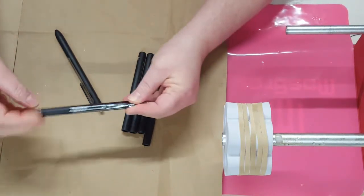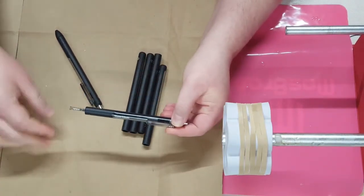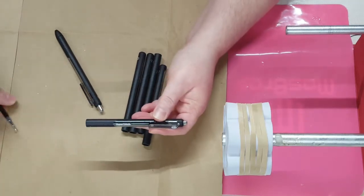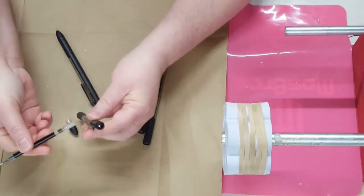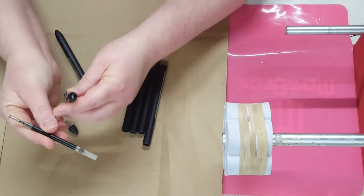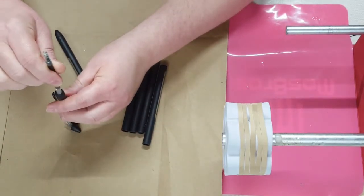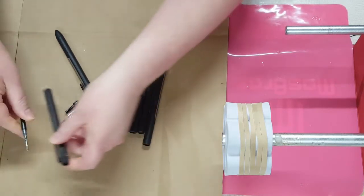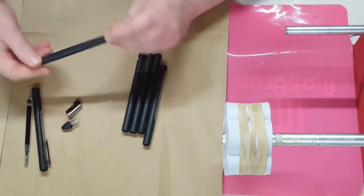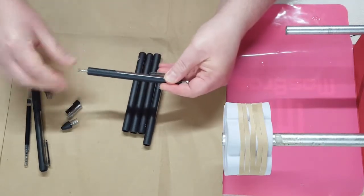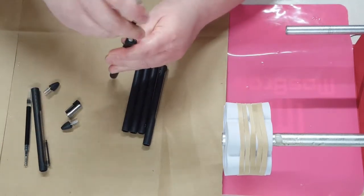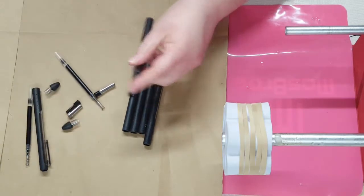And first we need to take them apart. So you're just going to unscrew the bottom, pull out your ease. And then I use just the ink thing to push out the top, the button.